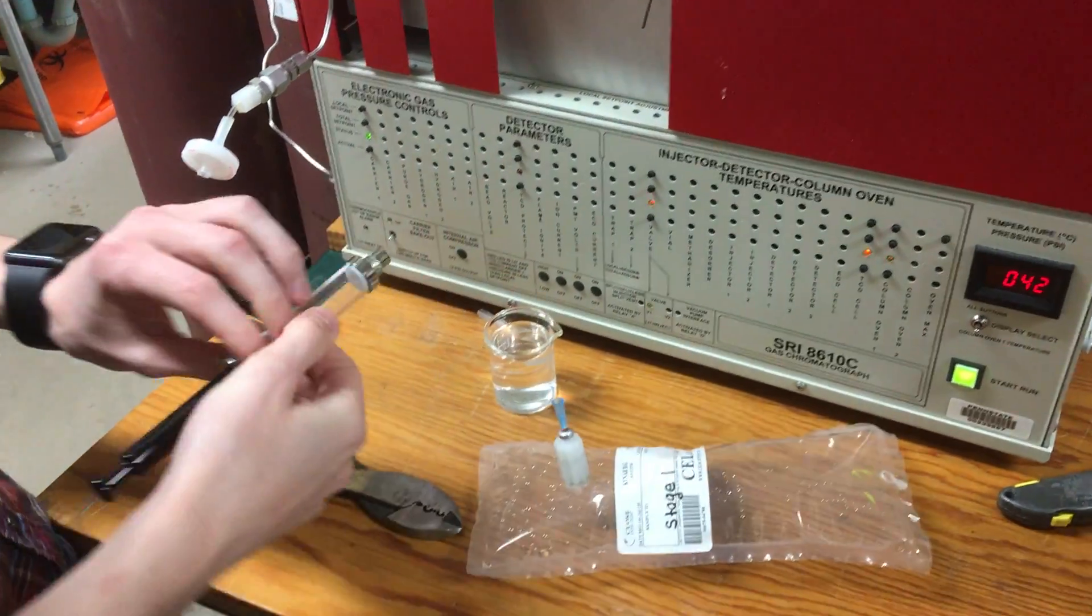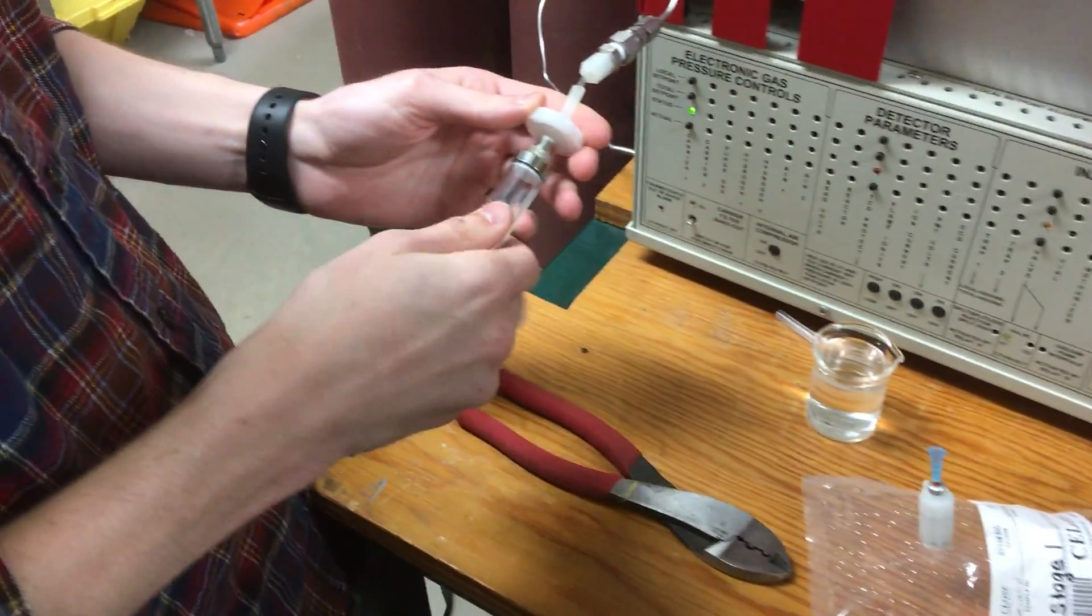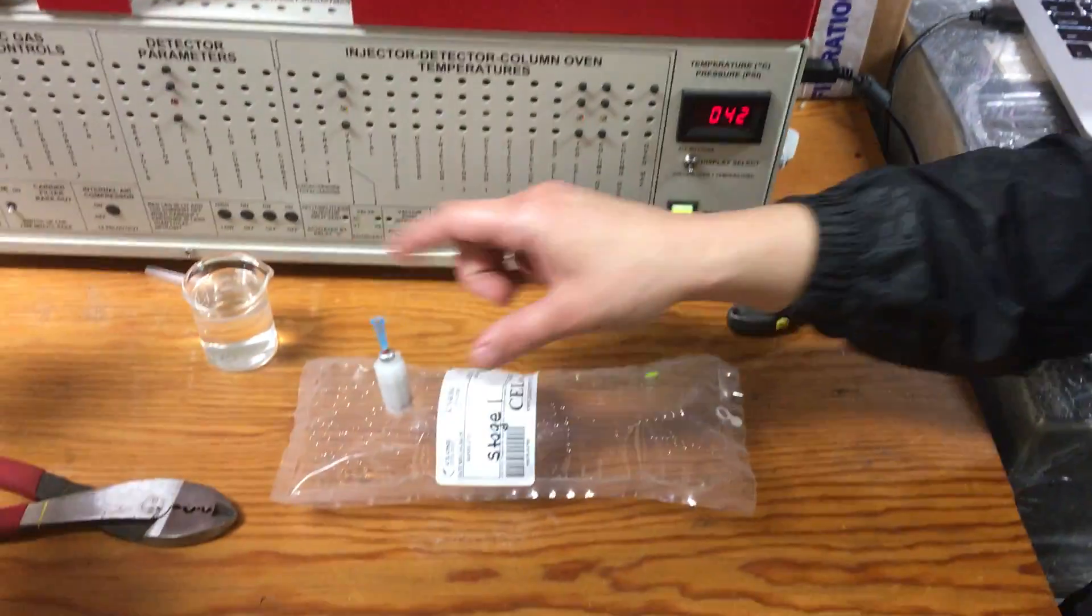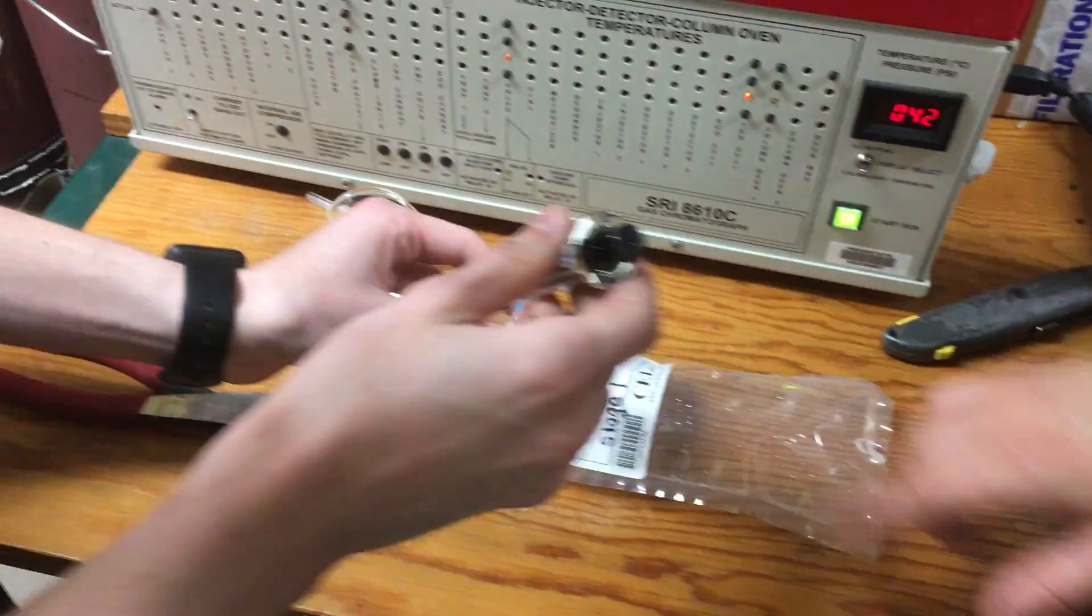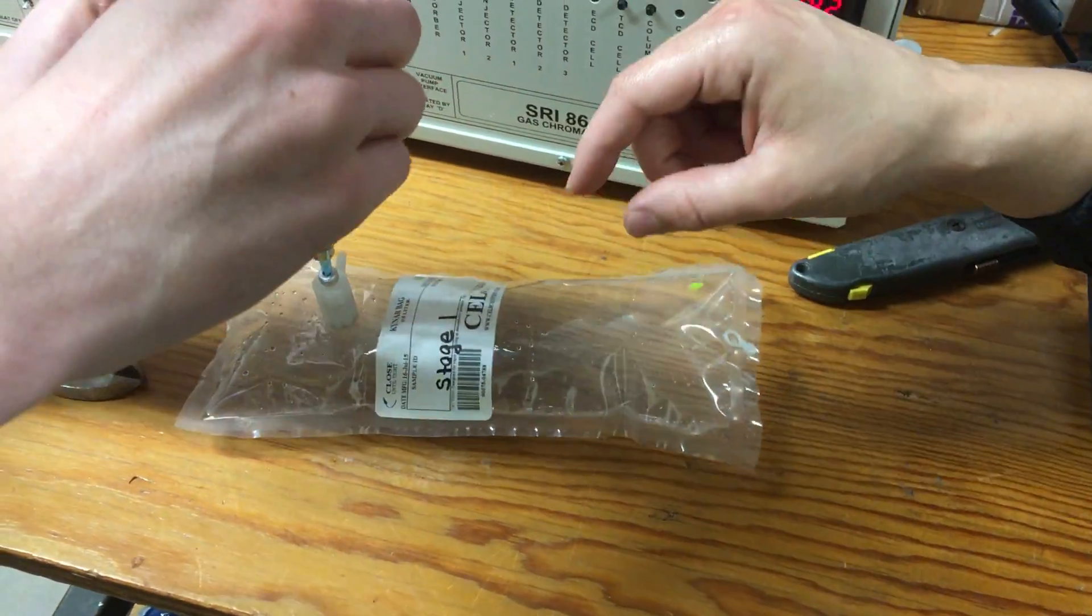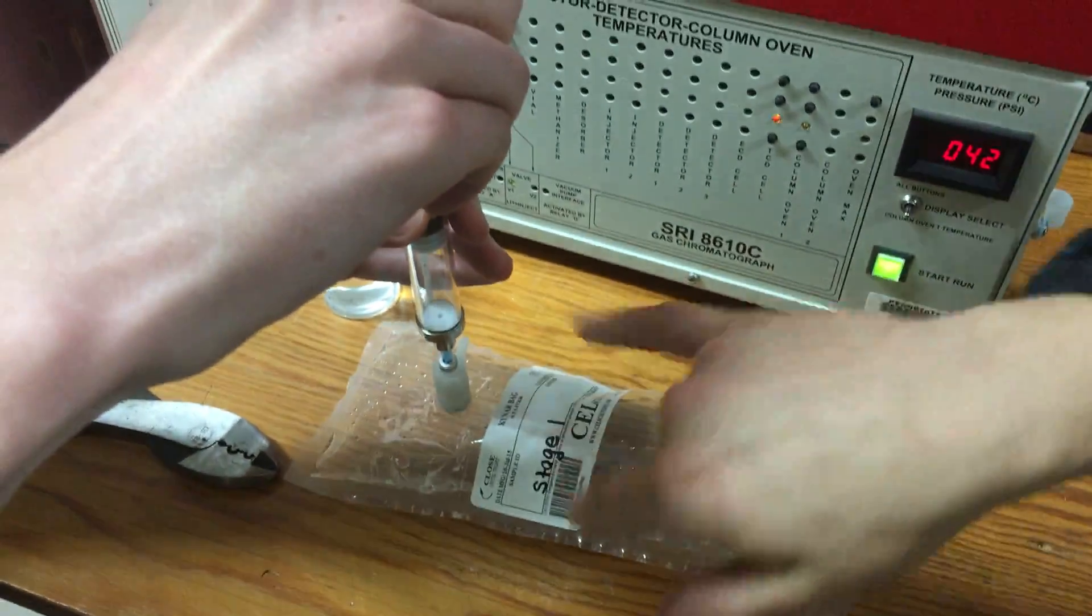Yeah, you're definitely purging it a couple times before putting in the actual sample. So what he means by that is he's pulling a sample from here. This is a gas collection bag - typically it should not have this amount of moisture in it. I won't go into details of that right now.